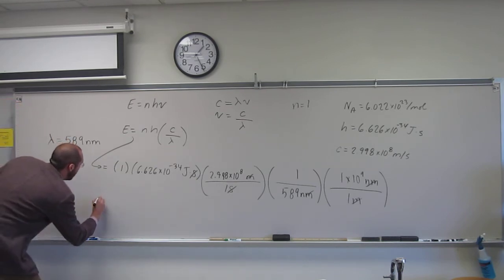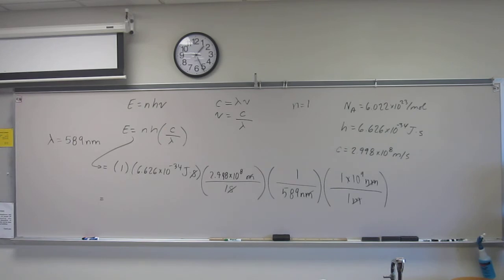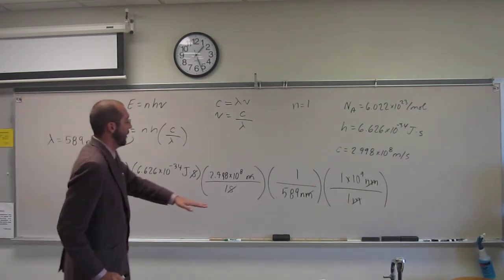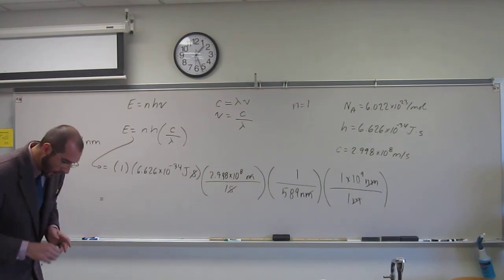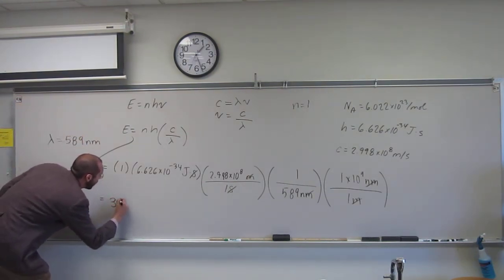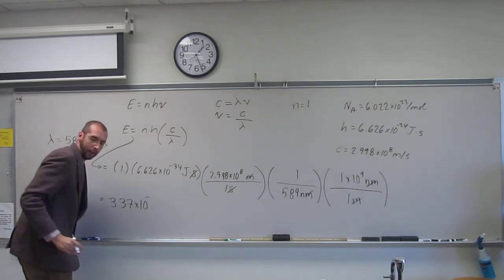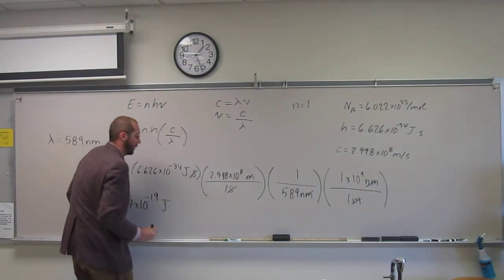So let's get our answer in. And again, I should expect this to be a small number because we're thinking about one photon in particular. And we'll do this to three sig figs because that's what our wavelength was. So I got 3.37 times 10 to the negative 19 joules for one photon.